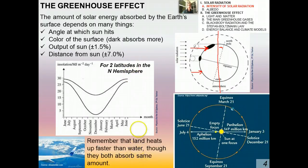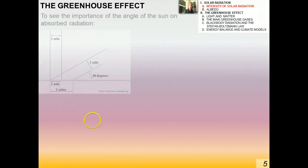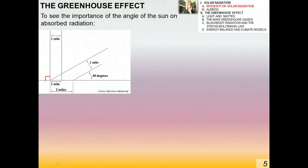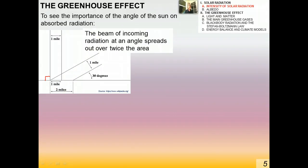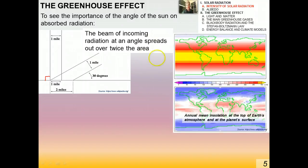Land heats up faster than water even though they absorb the same amount of energy — this is due to differences in specific heat capacity, which explains clouds forming over land but not water. The angle of the Sun on absorbed radiation is also important: a beam of sunlight one mile wide that is normally incident covers one mile of surface, but at 30 degrees the same energy is spread over twice the area, making the intensity much less. This is why sunlight intensity varies with the angle between the surface and the beam.